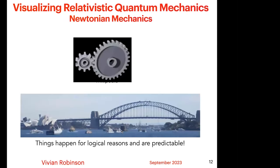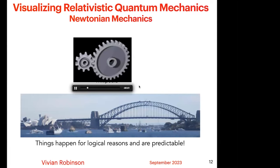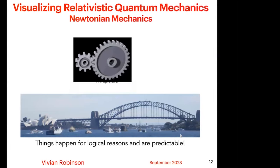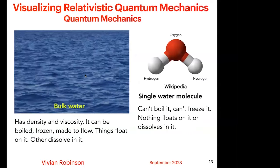Before we start, I want to point out things that people know are obvious but sometimes don't think about. Everything shown here can be explained by Newtonian mechanics — you don't need quantum mechanics for anything like that. Things happen for logical reasons that are predictable. But just take water as an example: bulk water has density, viscosity, it can be boiled, frozen, made to flow. Things float on it, others dissolve in it — all these properties are well known.